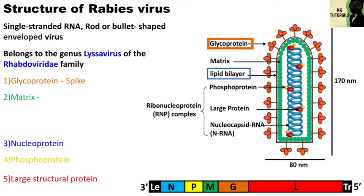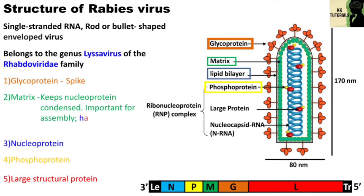Beneath the envelope, the matrix phosphoprotein layer lies. It keeps the nucleoprotein condensed and is important for assembly. It also has roles in regulation. The M-protein, i.e. matrix protein, forms a layer between the nucleocapsid and the envelope. The nucleoprotein coats the RNA at the rate of one monomer of protein to nine nucleotides, forming a nucleocapsid with helical symmetry. Copies of phosphoprotein are associated with the nucleocapsid, which is also associated with the large protein.